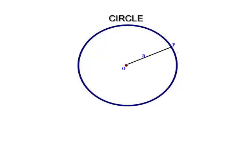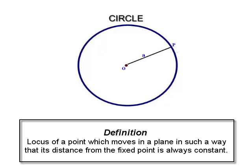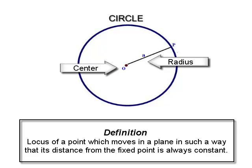Circle. A circle is defined as the locus of a point which moves in a plane in such a way that its distance from the fixed point is always constant. The fixed point is called the center of the circle and the fixed distance is called the radius of the circle.